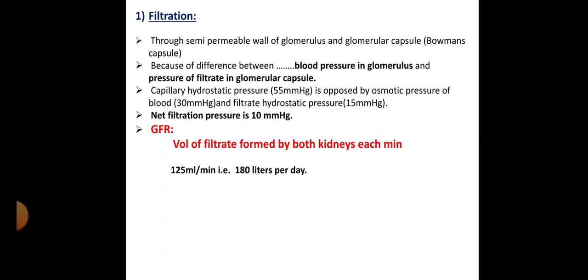The glomerular filtration rate (GFR) is defined as the volume of filtrate formed by both kidneys per minute. In numbers, it is around 125 ml per minute, meaning both kidneys normally produce 180 liters per day of filtrate. This is a huge number — 180 liters — but the urinary output in 24 hours is only around 1.5 to 2 liters per day.